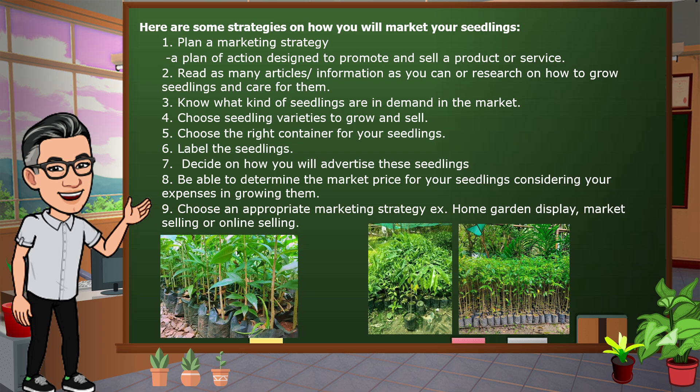Choose seedling varieties to grow and sell. Choose the right container for your seedlings. Label the seedlings. Decide on how you will advertise these seedlings. Be able to determine the market price for your seedlings, considering your expenses in growing them. Choose an appropriate marketing strategy such as home garden display, market selling, or online selling.